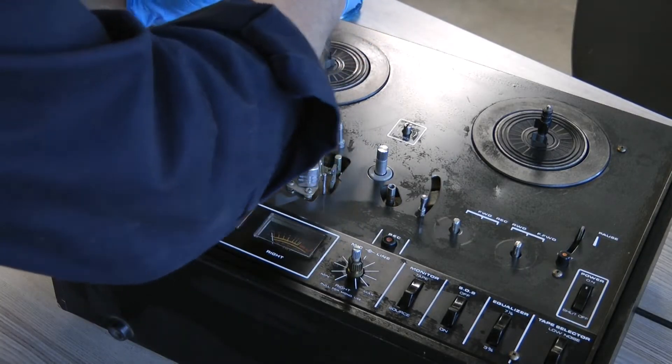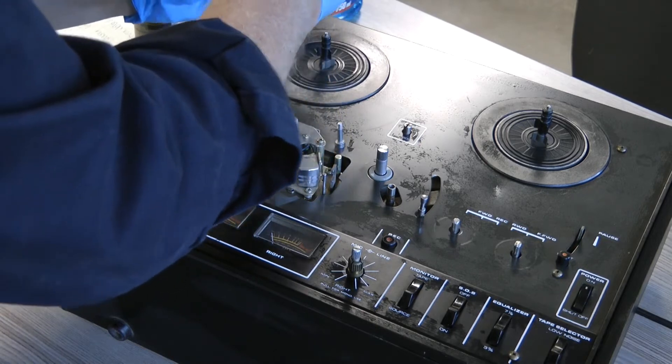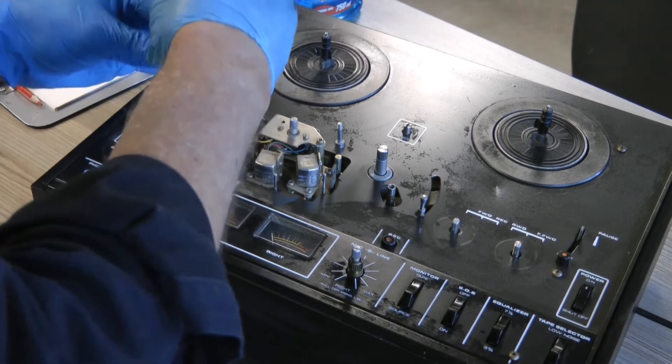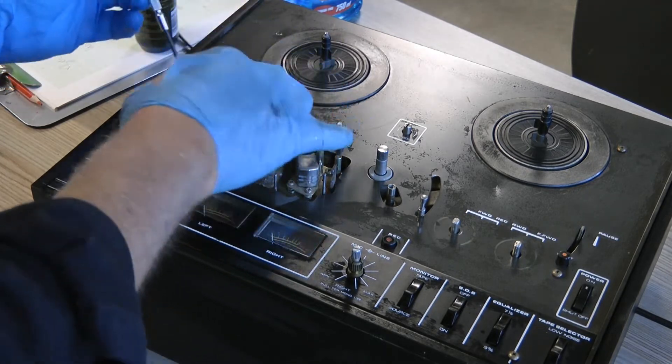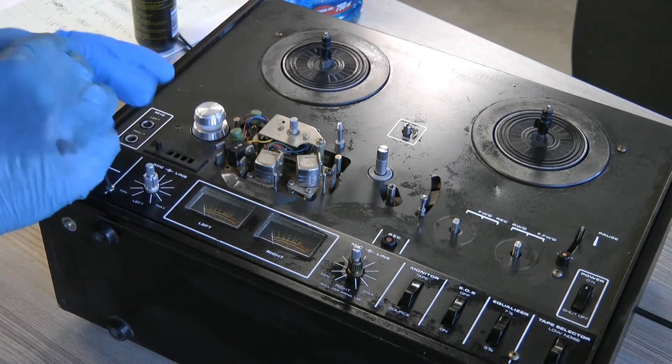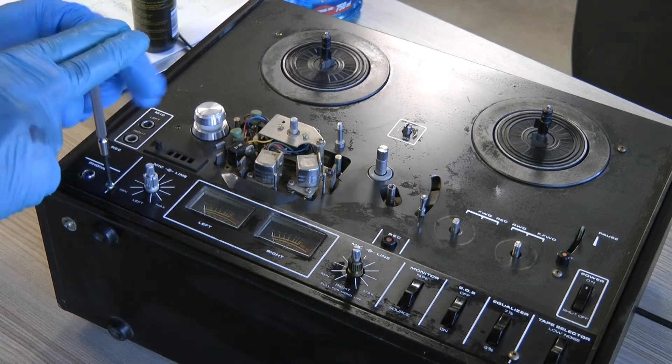We're going to undo screws one and two. These screws are corroded. This screw doesn't match at all, so I'm going to have to make a plan.